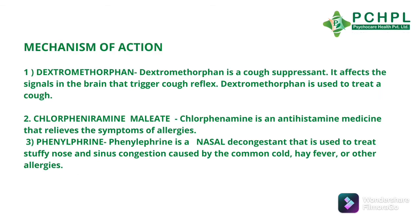Now we will discuss about its mechanism of action. The first ingredient is dextromethorphan. What category is it? It is a cough suppressant. It suppresses the cough by acting on the brain. In the brain, there is a cough center where sigma-opioid receptors are present. It activates those receptors, which is helpful in suppressing cough. The second ingredient is chlorpheniramine maleate, which is an anti-histamine medicine. It blocks the action of histamine. Histamine is responsible for allergic reactions such as watery eyes and runny nose, and this helps treat those allergic symptoms.